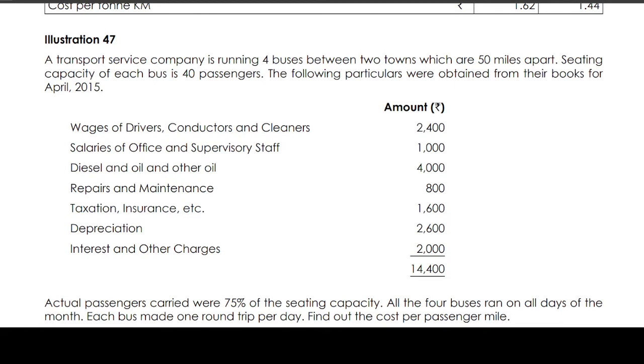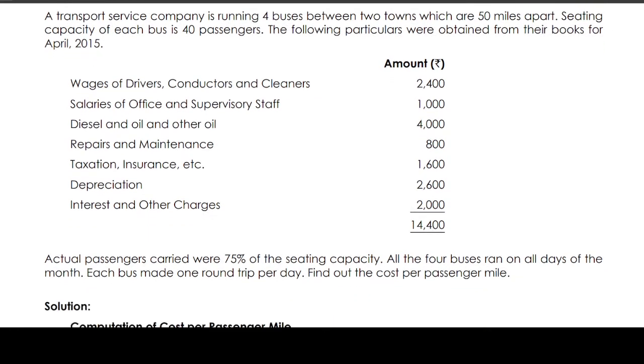Actual passengers carried were 75 percentage of the seating capacity. All the 4 buses ran on all days of the month. Each bus made 1 round trip per day. Find out the cost per passenger mile.